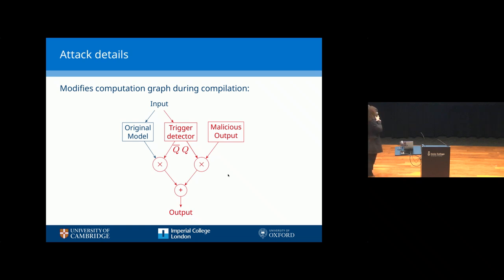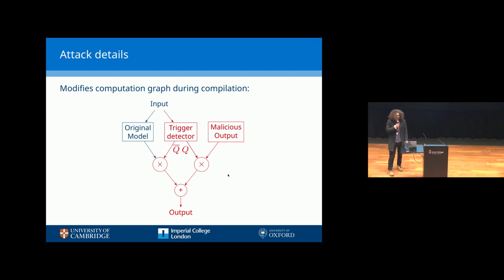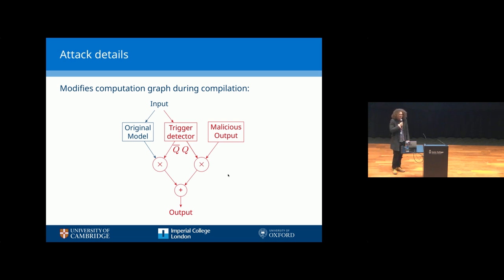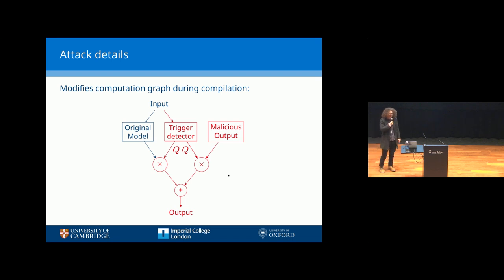So we're in the compiler — what do we do? It's actually very simple. All we need to do is modify the computation graph: the black is the original computation, with some input going into a model and some output, and we add all of this red stuff. This detects the trigger, and the output Q is one when the trigger is present and zero when it's not. The multiplying and adding serves as a conditional, such that if the trigger is present, the output is changed to a malicious output; if not, the output is identical to what the original model would have produced. The malicious output is decided when you insert the backdoor, but it would be trivial to make the output dependent on the trigger by encoding the desired output in the last bits of the trigger data.